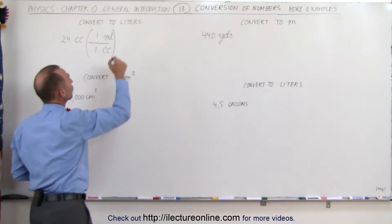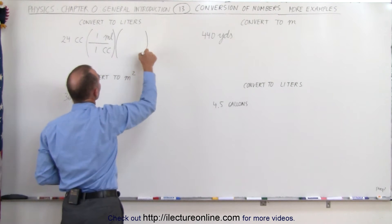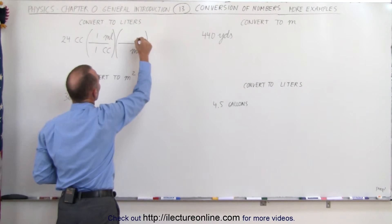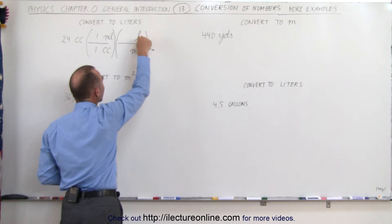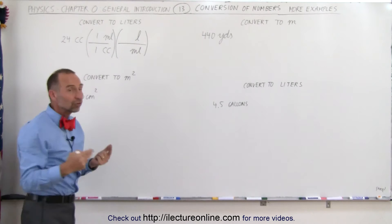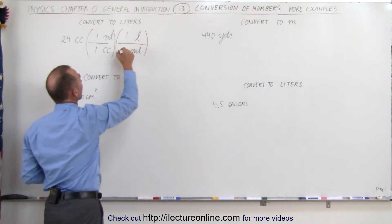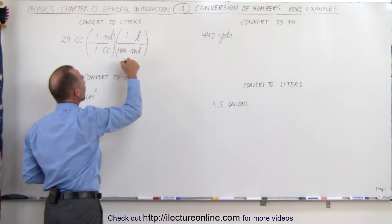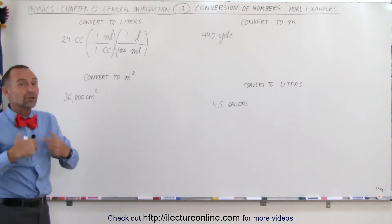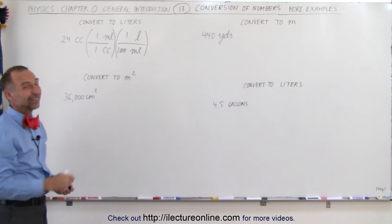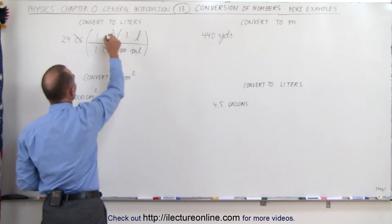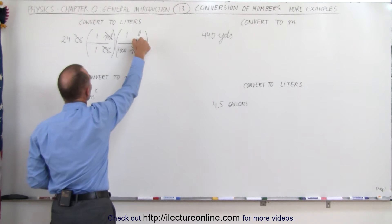The next conversion is going from milliliters to liters. Since we have milliliters at the top, we want milliliters at the bottom and liters at the top, because that's what we're actually converting to. The ratio is that for one liter we have a thousand milliliters. When you place the units in the proper location first and then put in the conversion factor, you're much less likely to make a mistake. Cubic centimeters cancels out, milliliters cancels out, and we're left with liters.